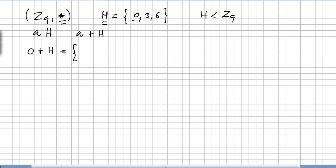Let us check the cosets for H in Z9. 0 plus H equals {0+0, 0+3, 0+6} = {0, 3, 6}. You can check that 3 plus H gives {3, 6, 9 mod 9 = 0}, so you get the same set.